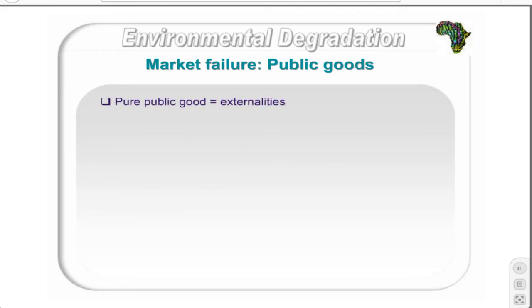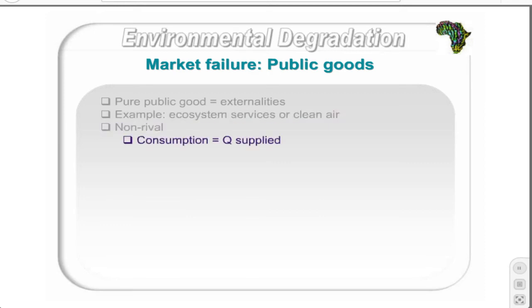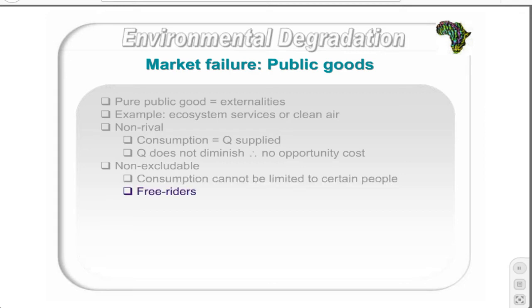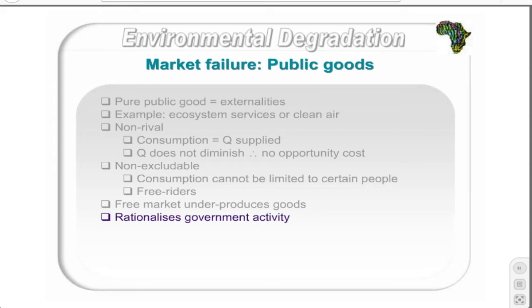A pure public good is made up of only externalities — there are no private costs or benefits that can be incurred. Examples include ecosystem services such as the nutrient cycle, management of water flows, and clean air. Pure public goods are non-rival, meaning consumption by one individual does not reduce the quantity supplied, with no opportunity cost associated with consumption. Furthermore, public goods are non-excludable — no one can be prevented from consuming them — posing the problem of free riders, who conceal their preferences to enjoy benefits without paying. Thus the free market will under-produce public goods.